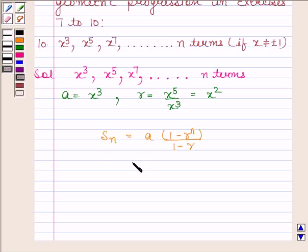Now here a is equal to x cube and r is x square. So we have x square to the power n upon 1 minus x square.